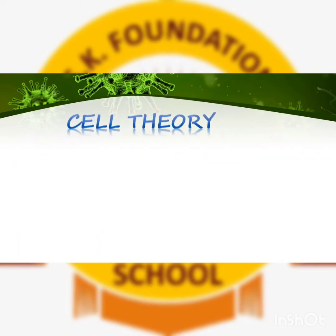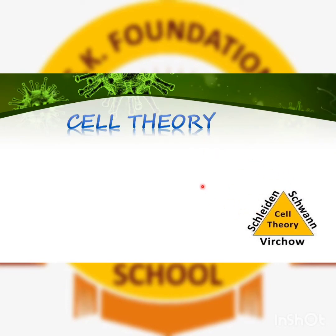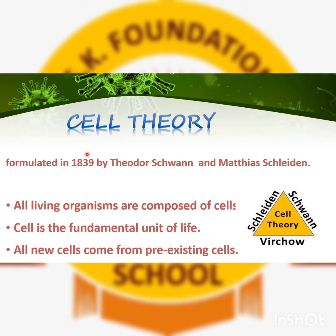After learning this, you have to learn what is Cell Theory. Cell Theory was formulated in 1839 by Theodor Schwann and Matthias Schleiden. The three-point Cell Theory states: first, all living organisms are composed of cells; second, the cell is the fundamental unit of life; and third, all new cells come from pre-existing cells.